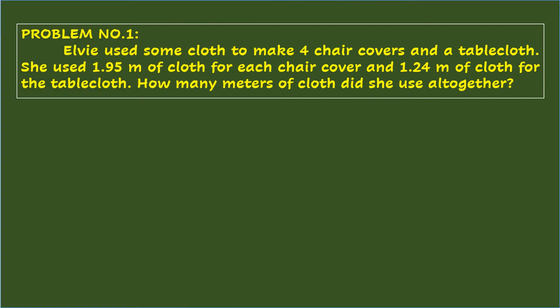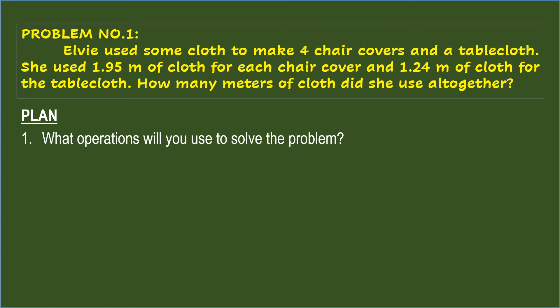After understanding the problem, you will now plan on what to do. You need to answer: What operations will you use to solve the problem? The operations are not directly stated in the problem, but by analyzing the given facts, you will multiply four chair covers by 1.95 meters, and add the product to 1.24 meters to get the total number of meters of cloth.